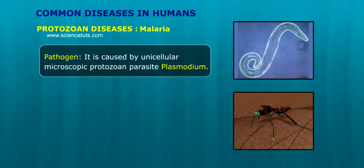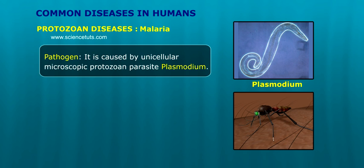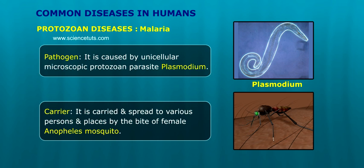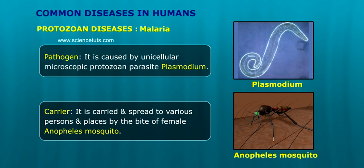Pathogen: Malaria is caused by a unicellular microscopic protozoan parasite called Plasmodium. Carrier: It is carried and spread to various persons and places by the bite of a female Anopheles mosquito.